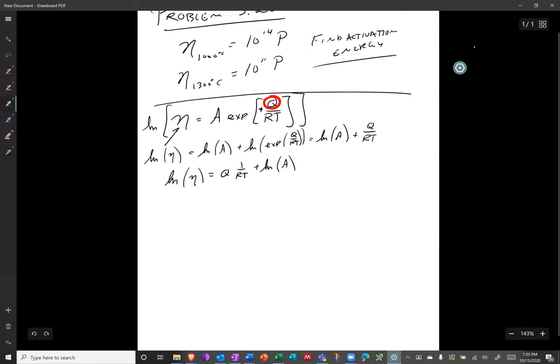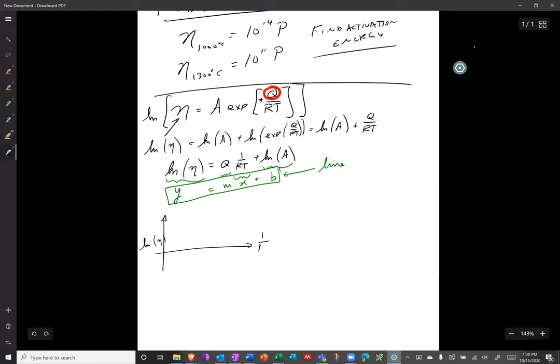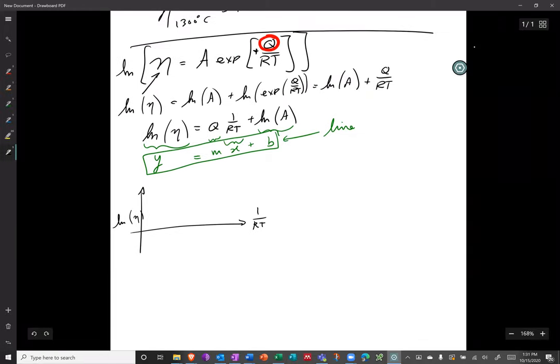The viscosity is equal to Q over RT plus the natural log of your prefactor. And this has the same functional form as Y is equal to MX plus B. So that is just a line. So if you have the natural log of your viscosity versus 1 over RT, we'll have two points. We'll have two points and a line. The slope gives you M and the intercept gives you B.